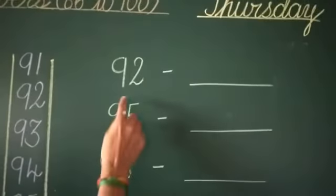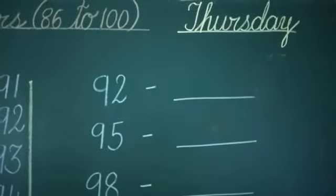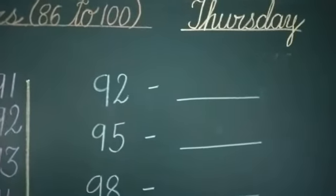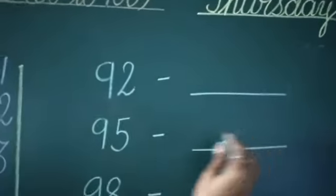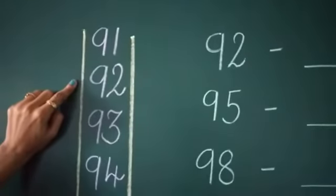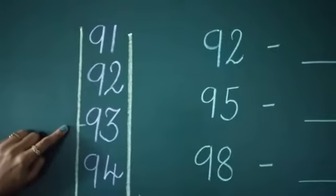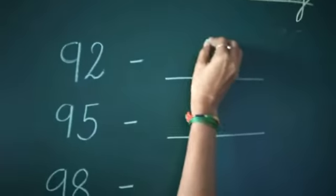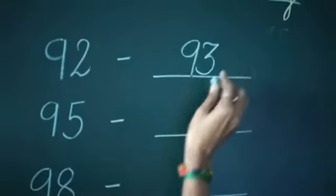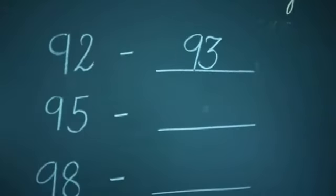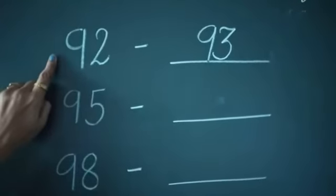Now next, number 92. Which number comes after number 92? Look at here — number 92. Which number comes after? Number 93. So number 93 comes after number 92.